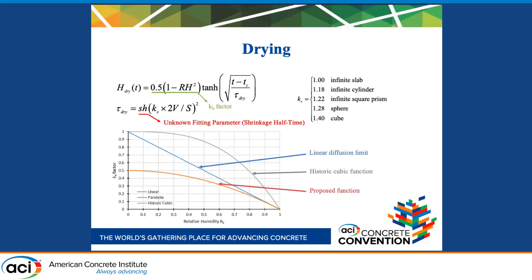The expression for the characteristic drying time, tau_dry, located below the main equation was found. The k_s term equals a size factor based on the shape of the specimen being tested, located to the right. SH represents an unknown shrinkage halftime parameter, which we found by calculating the profile likelihood for each dataset, which I will discuss in a bit.